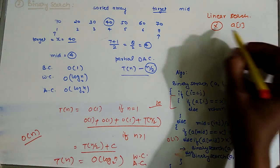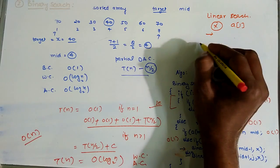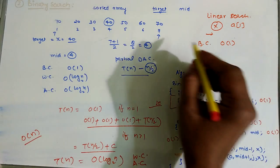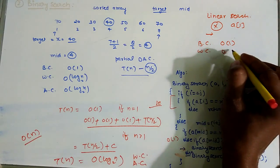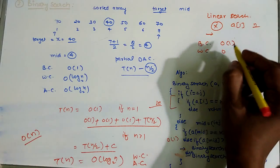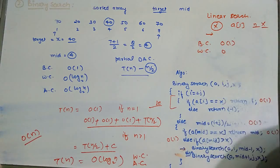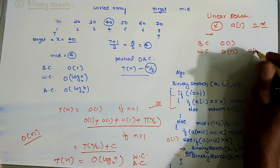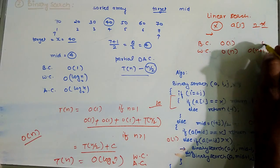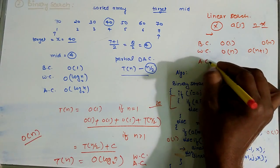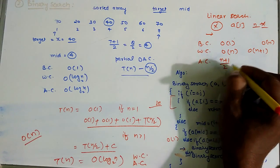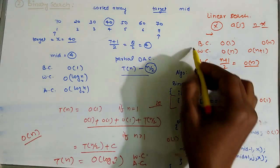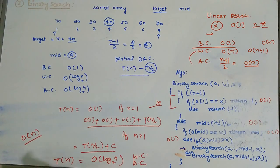In the best case for linear search, it requires only O(1) time because the element is found at the first location. The worst case occurs when the element is at the last index or not present in the array, requiring n comparisons — so worst case is O(n). The average case time complexity is (n+1)/2, which is O(n). So linear search has O(n) for worst and average case, and O(1) for best case.